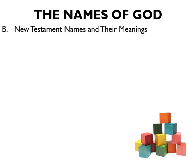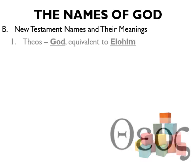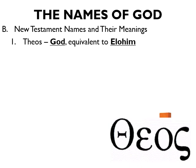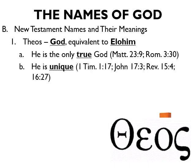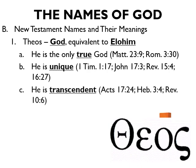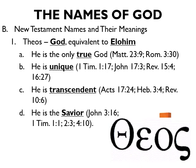Now that we've discussed the Old Testament names of God and their meanings, let's move on to the New Testament names. The first and most common is Theos. Theos means God, which is equivalent to Elohim. As God, He is: (A) the only true God, as opposed to all the false gods; (B) He is unique, the one and only; (C) He is transcendent, far above us and the universe; and (D) He is the Savior. This name, Theos, is used of Jesus as God in John 1, John 20, 1 John 5, Titus 2, Romans 9, Hebrews 1, and 2 Peter 1, just to name a few places.